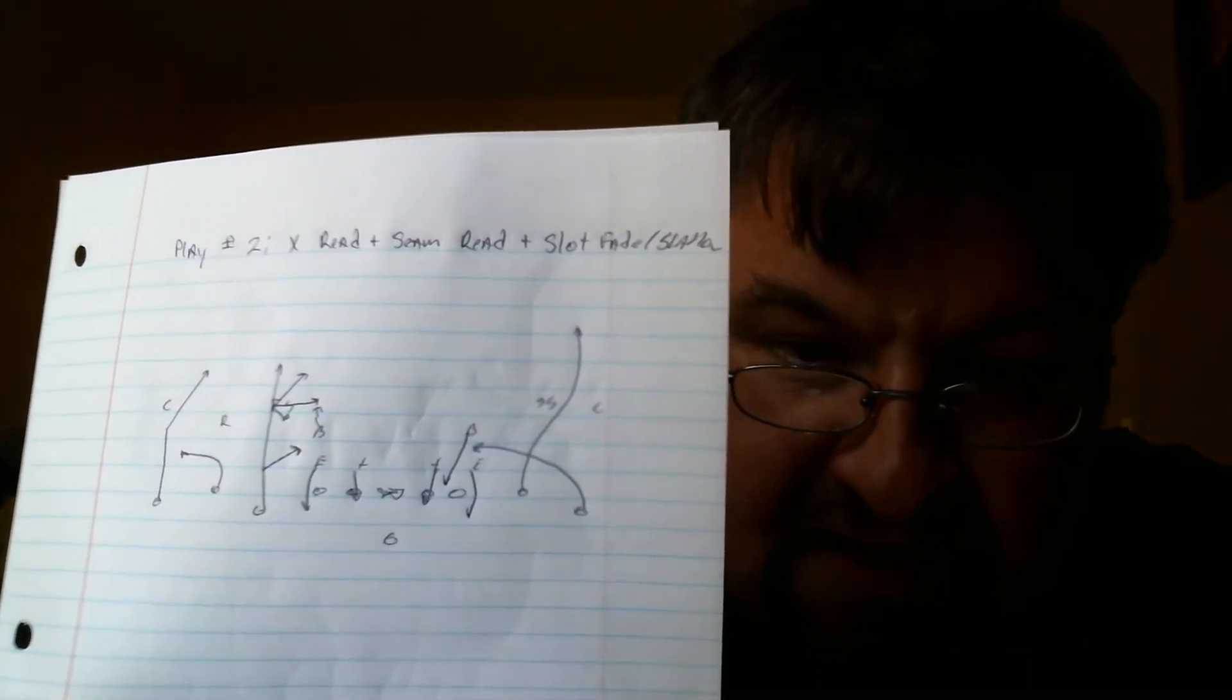Second play is a combination X read, seam read, slot fade, and shallow cross. Now, on the trip side, your X and your slot are going to run the run and shoot read concept. You see there, number three is going to run a seam read. He has five different choices. The first one is you see the defensive end running up the field and the linebacker dropping in the coverage. That creates a void, so we can attack that void.